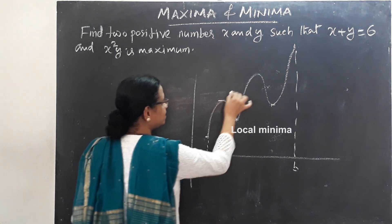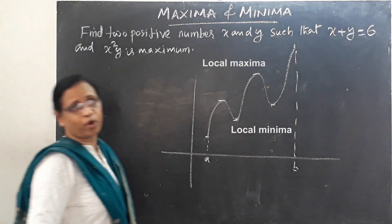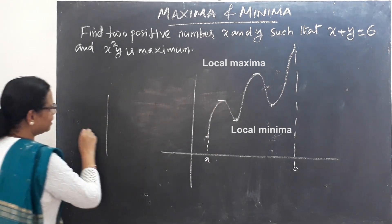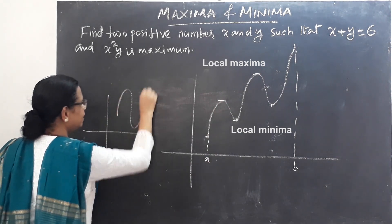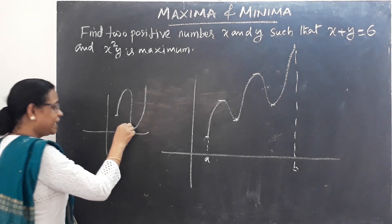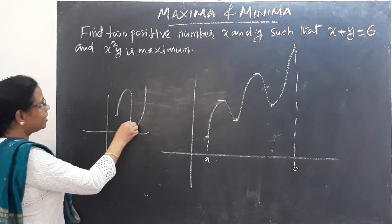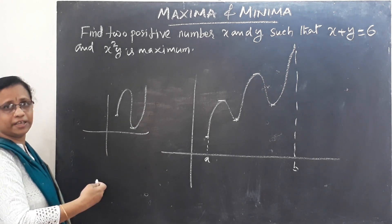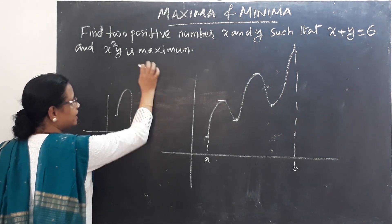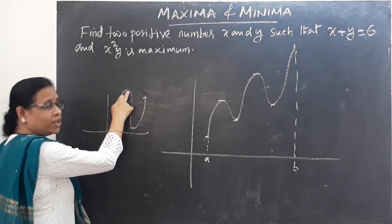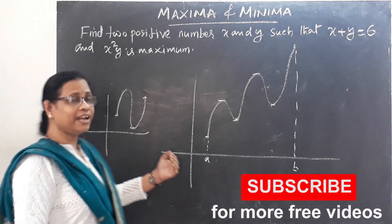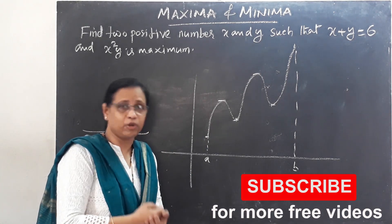These two points are local maximum points. I find the number of values in the main function of the figure. The minimum is given at the local minimum point, and the minimum is given here.